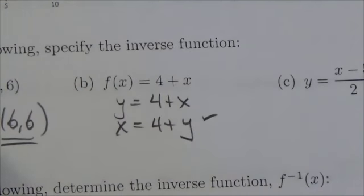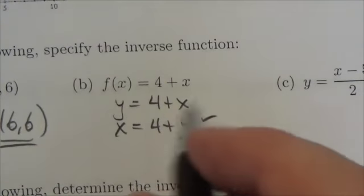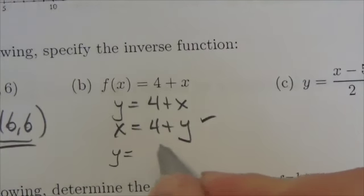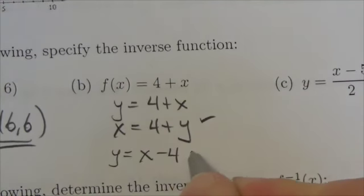So what we're going to do here is we're going to move things around, we're going to get y isolated, and that is simply going to be x minus 4. And that's a better way to write it.